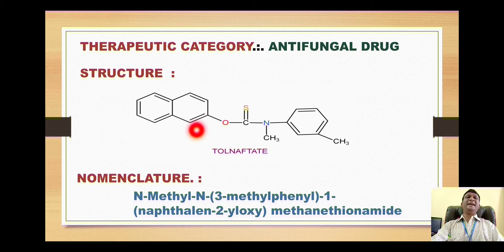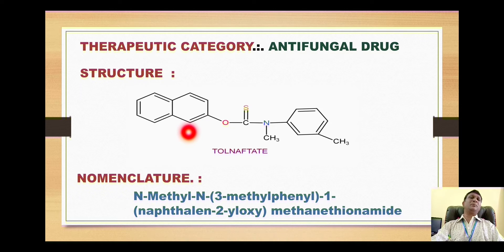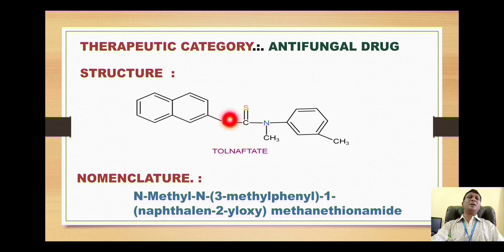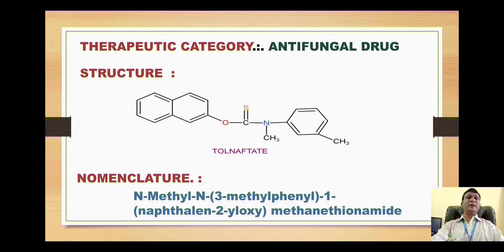For naphthalene, the numbering starts with the alpha position, numbered 1, and the next is number 2. So we can say that on portion number 1 we have naphthalene-2-yl-oxy. That will be the complete IUPAC name of tolnaftate.